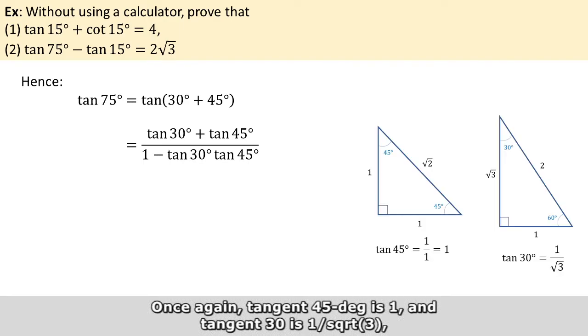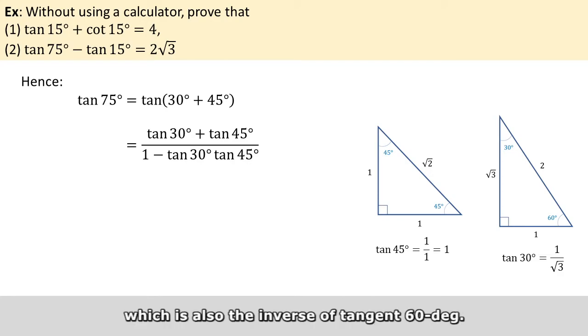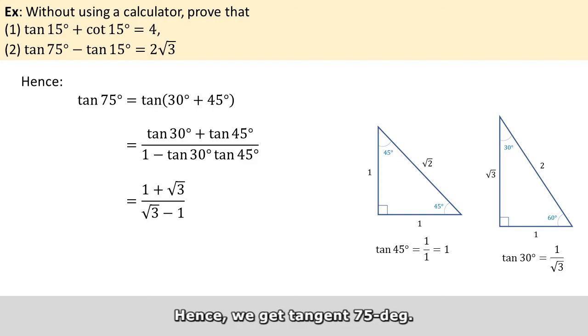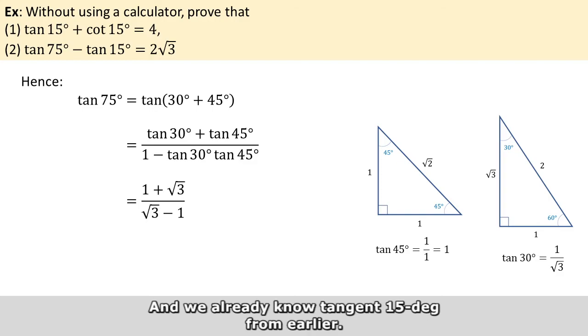Once again, tangent 45 is 1 and tangent 30 is 1 over square root of 3, which is also the inverse of tangent 60. Hence, we get tangent 75. And we already know tangent 15 from earlier.